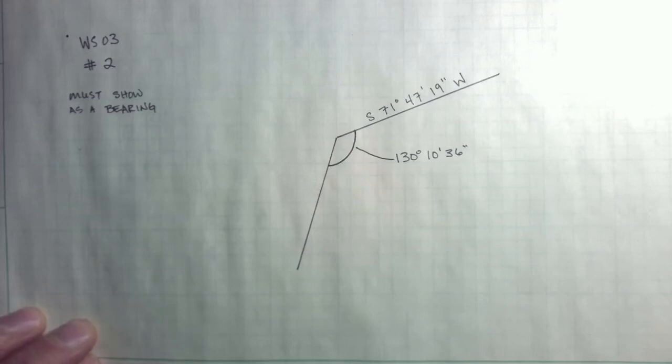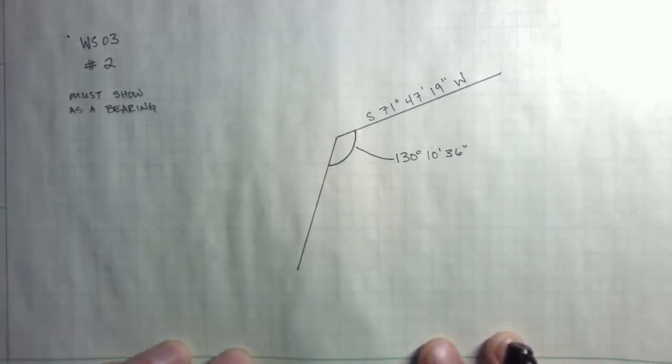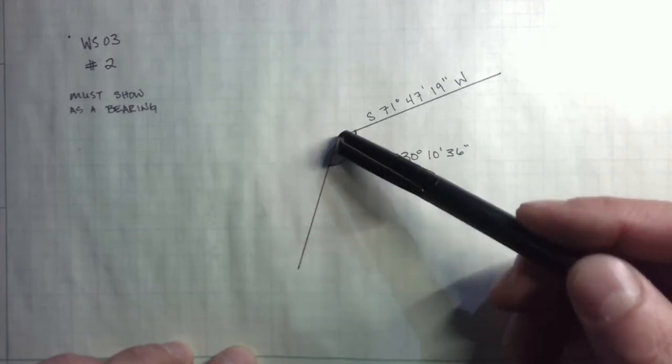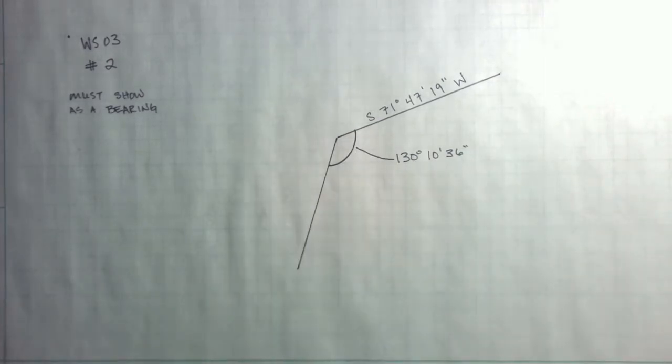Okay, let's take a look at a problem from worksheet number three. This is problem number two on worksheet three. So we have to solve for the bearing on this unlabeled line. Solve for the missing bearing.